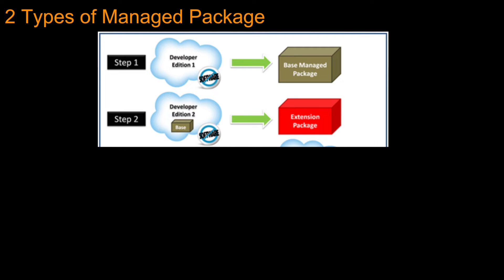This chart summarizes what we learned about packages. There are two types: managed and unmanaged. But there are also two types of managed packages: one is the base managed package and then there is the extension package. For example, Accounting Seed Financial Suite is the core - the bread-and-butter accounting software.